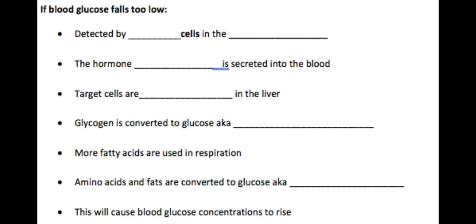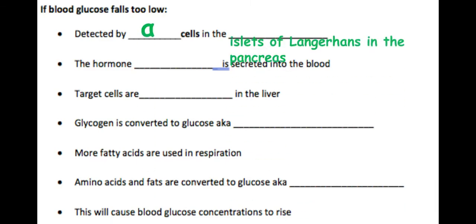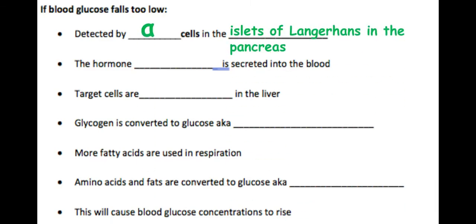If blood glucose concentration falls too low — for example, if you haven't eaten for a while and a lot of glucose has been used up in aerobic respiration — this is detected by the alpha cells found in the islets of Langerhans within the pancreas.